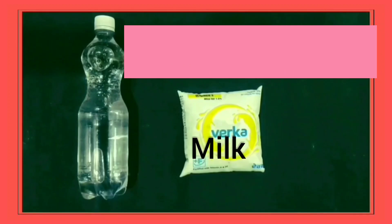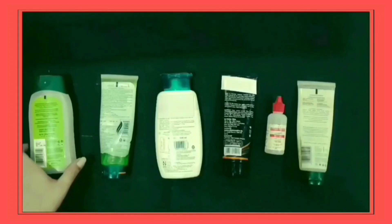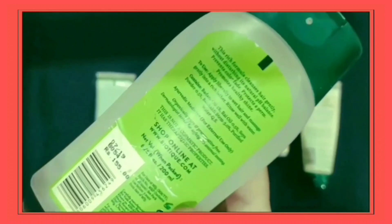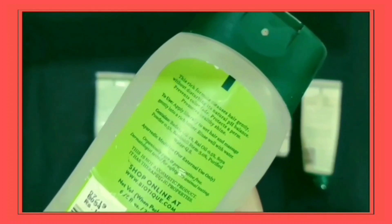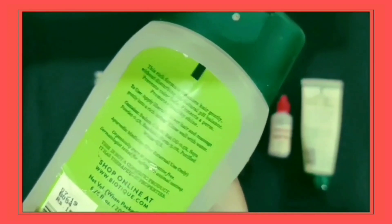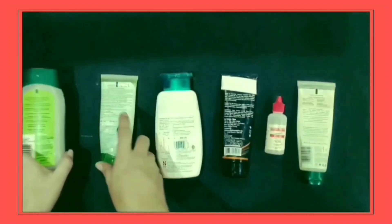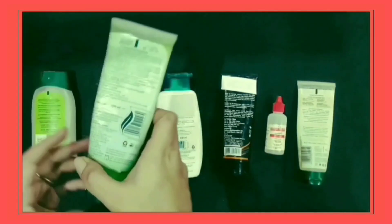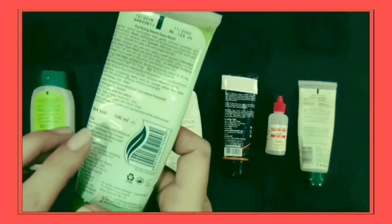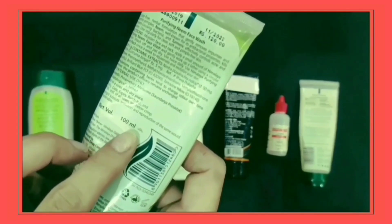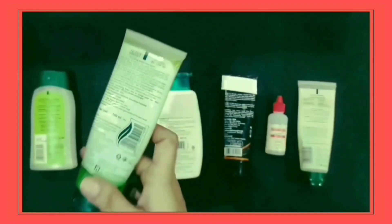Students, let's see the capacity of different objects. The capacity of this shampoo bottle is 200 millilitre and the capacity of this face wash bottle is 100 millilitre.